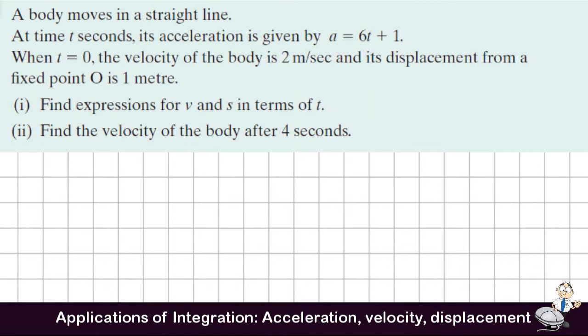We're given initial conditions. We know that when t is 0, the velocity is 2 meters per second and its displacement is 1 meter. We're asked to find expressions for v, velocity, and s, the displacement, in terms of t. And then we're asked to find the velocity after 4 seconds.